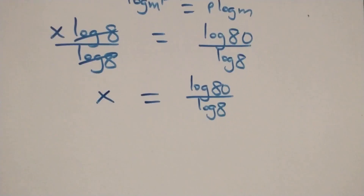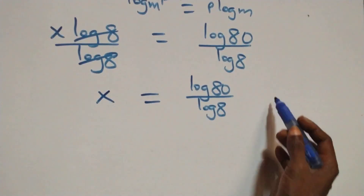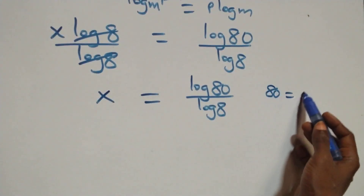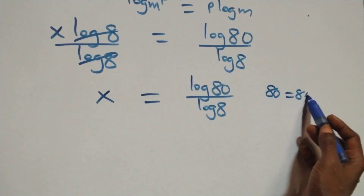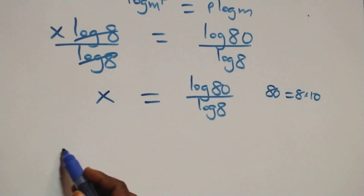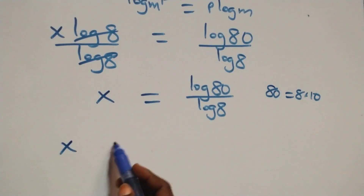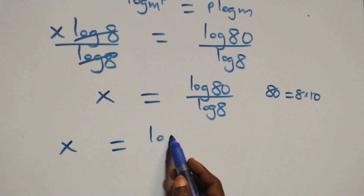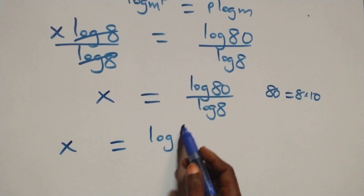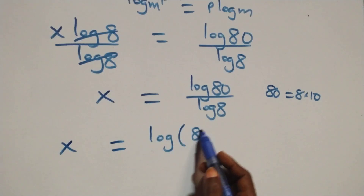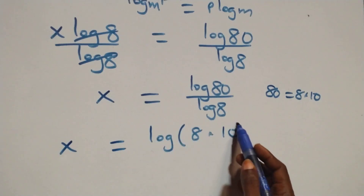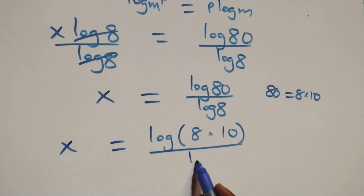The next step here we can express 80 as 8 times 10. So what we have becomes x equals log(8 times 10) over log 8.